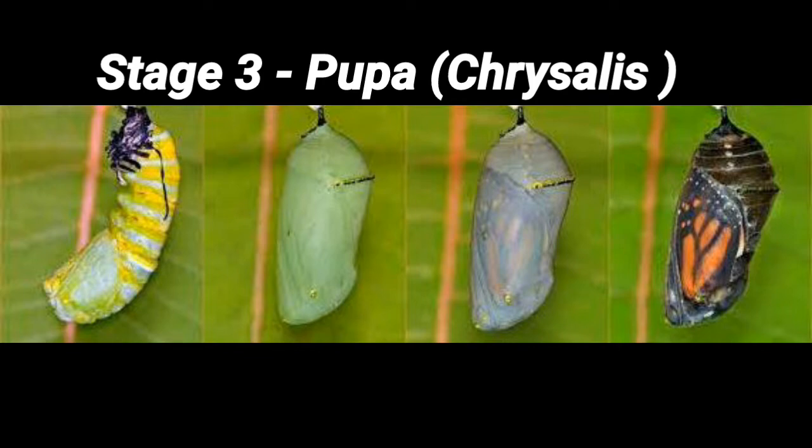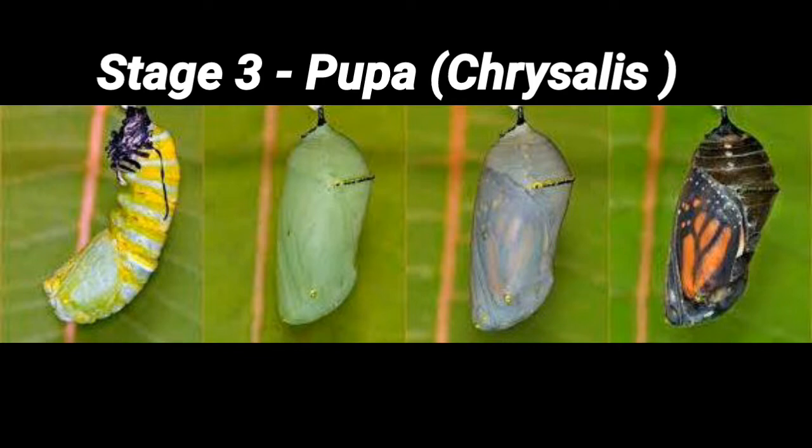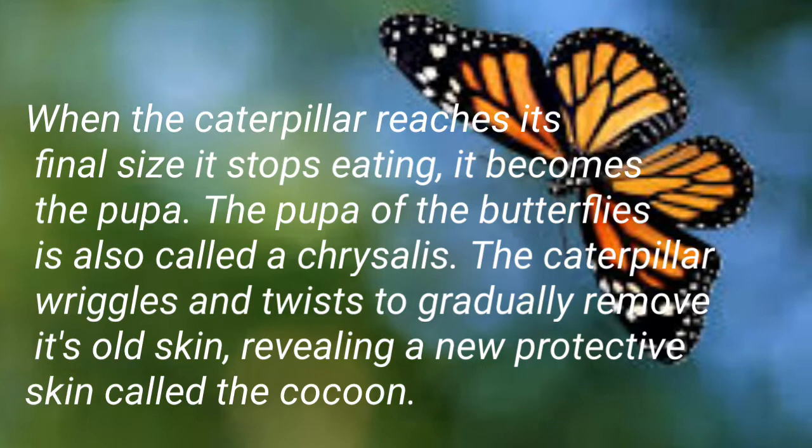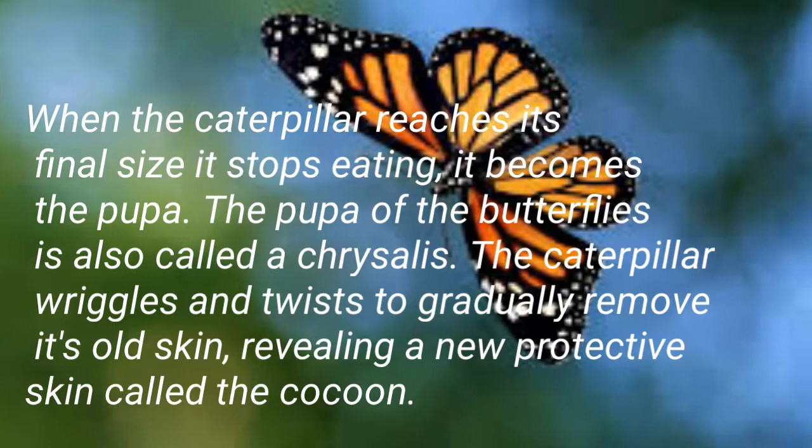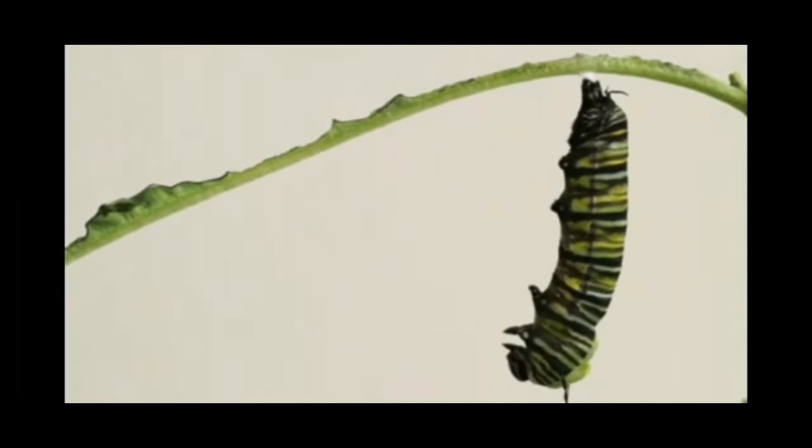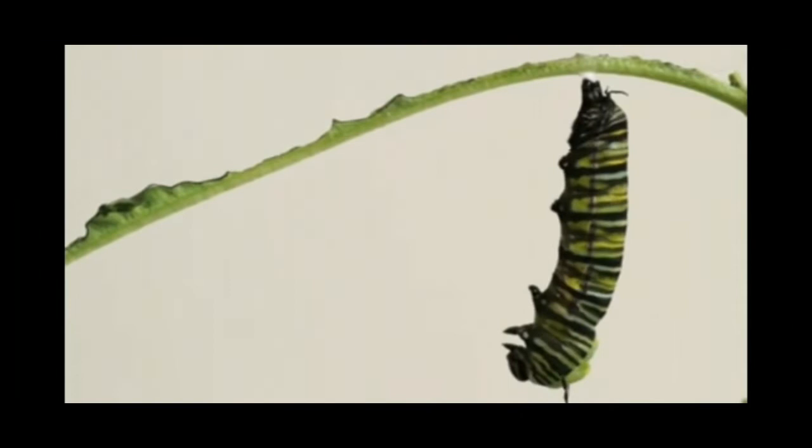Stage 3: Pupa, or the Chrysalis. When the caterpillar reaches its final size it stops eating and becomes a pupa. The pupa of the butterfly is also called a chrysalis. The caterpillar wriggles and twists to gradually shed its old skin, revealing a new protective casing called a cocoon. The caterpillar has now become a pupa.